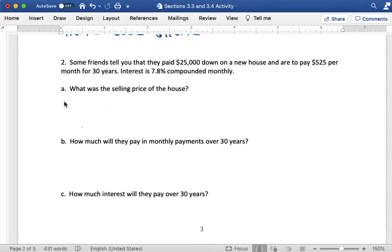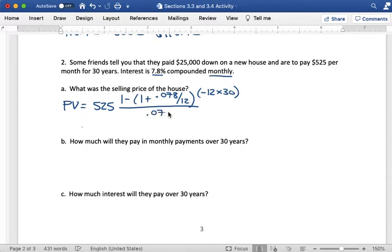So my payment amount is $525. And then I have 1 minus, 1 plus. My interest rate is 7.8% compounded monthly. So my i is 0.078 divided by 12. And then in my exponent, make sure I get that minus sign, minus 12 times 30. So I have 360 total payments. So that's going to be my n value. And then down here, I have i again, 0.078 over 12.